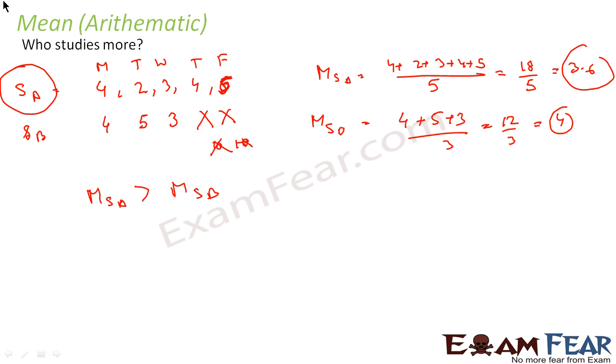For this we have used mean, which is one of the types of central tendency, one of the measures of central tendency. Mean also tells you where the exact center of data is.